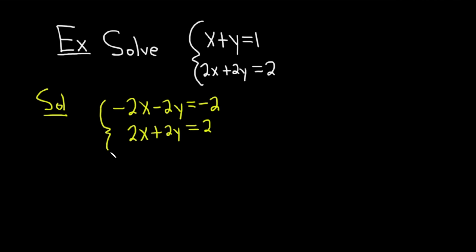And now we can add these equations. Negative 2x plus 2x is 0. Negative 2y plus 2y is 0. And negative 2 plus 2 is 0. So we get 0 equals 0.